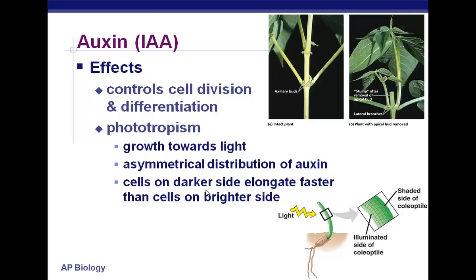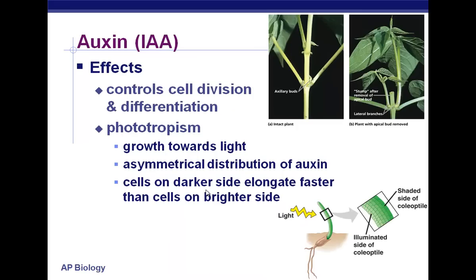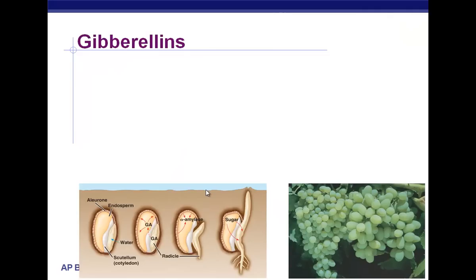We went into a bit more detail in your reading guide. But basically, make sure you can attribute the fact that auxins cause growth and elongate cells. Your book showed pictures comparing plants treated with auxins versus plants not treated with them, and it definitely affects their growth.